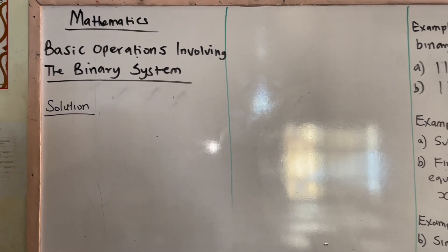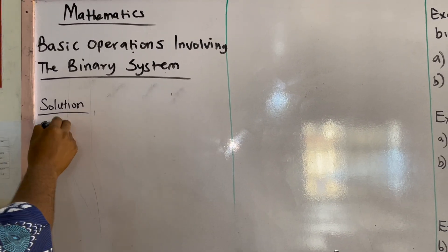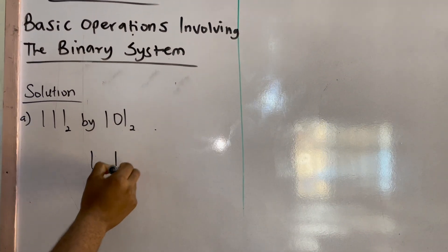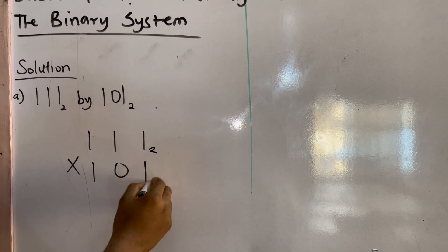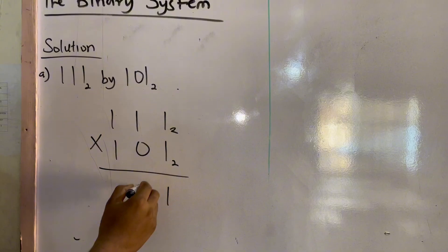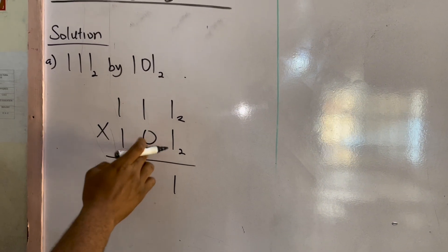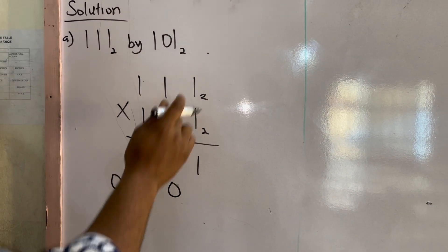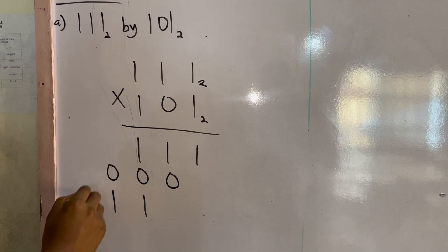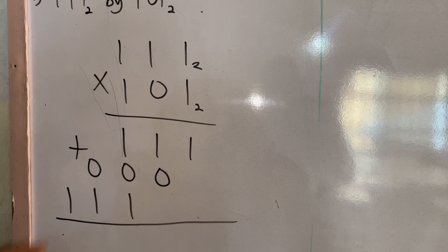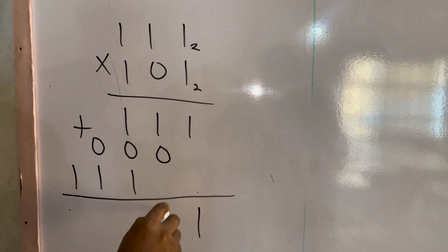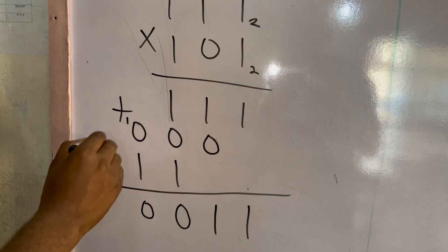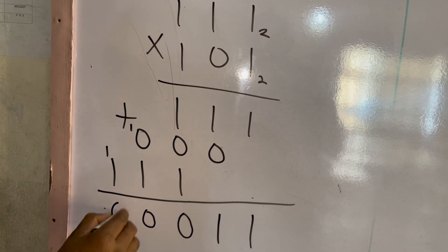For example 3, part one: multiply 111 by 101, all in base 2. So we have 111 times 101 in base 2. 1 times 111 gives 111; 0 times 111 gives 000; 1 times 111 gives 111. Now we add the partial products: 1 plus 1 gives 0, carry 1; and continuing to carry through gives the final result.